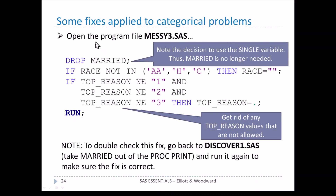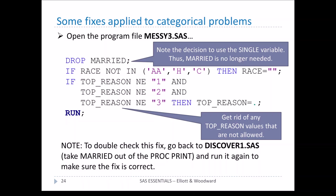We can perform these corrections in messy3.sas. First, drop the married variable since we decided to use single. Then use: if race NOT IN the valid codes, set race to blank. If top_reason is not equal to 1, 2, or 3, set top_reason to blank. You could also use a SELECT statement for this. After making these corrections, go back to discover1 and verify the corrections have taken effect.